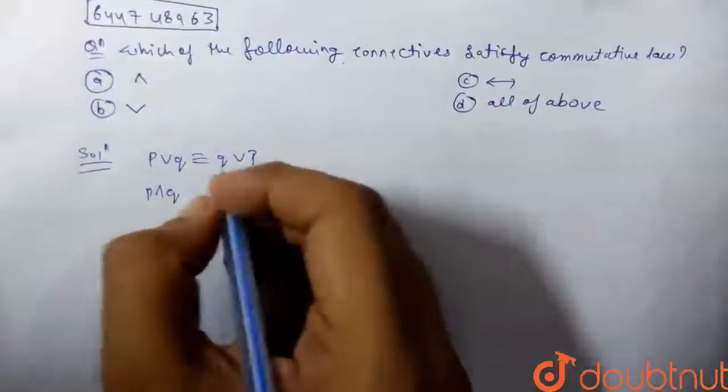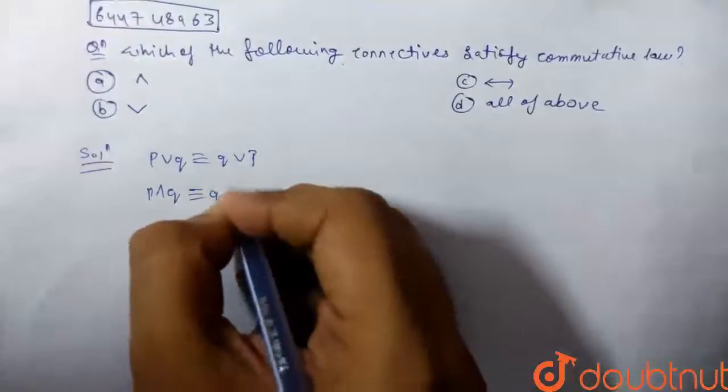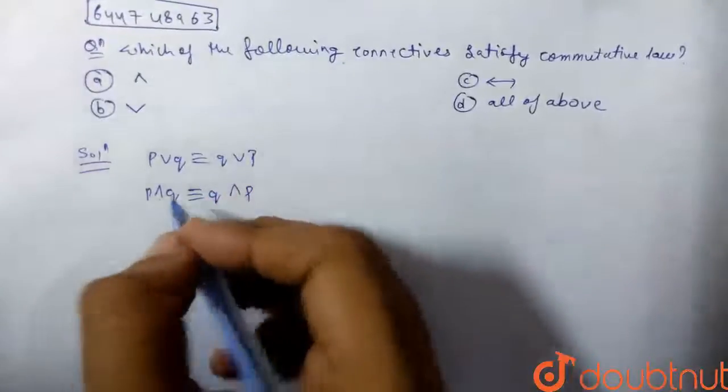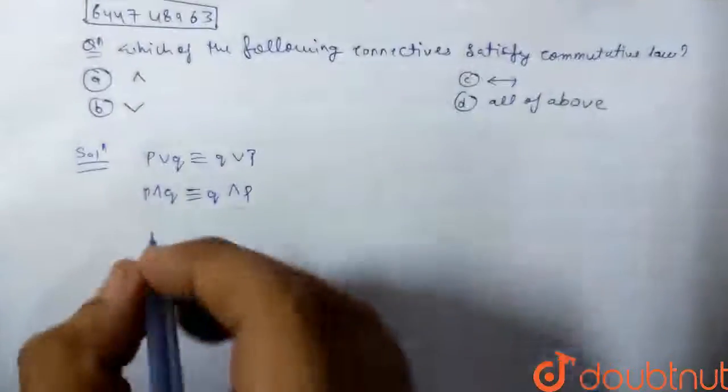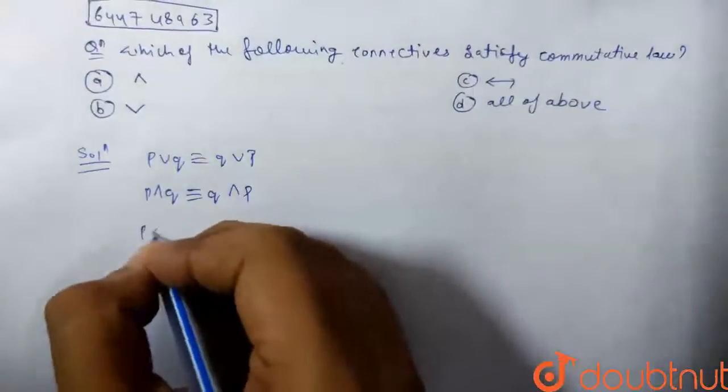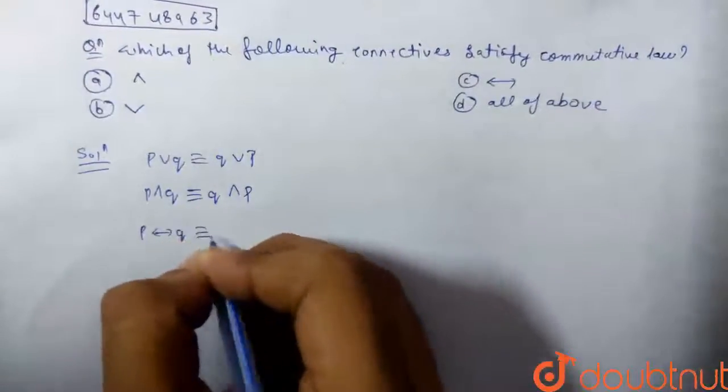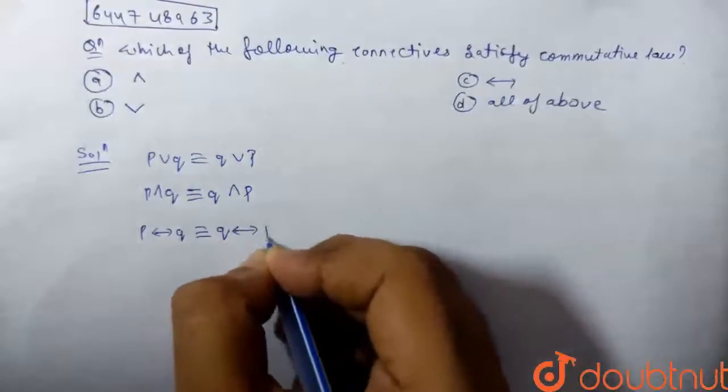p intersection q is also logically equivalent to q intersection p, and this property is also held by conditional operator such that p by conditional operator q is also logically equivalent to q by conditional operator p.